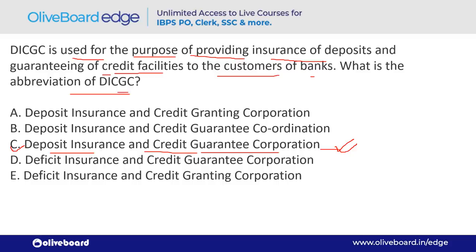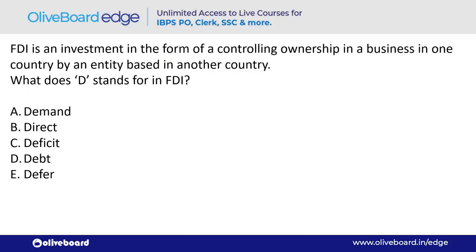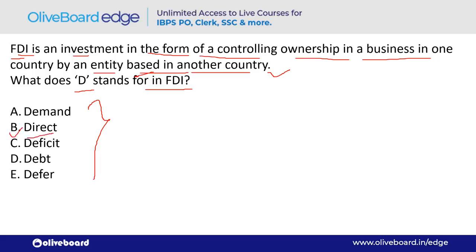FDI is an investment in the form of a controlling ownership in a business in one country by an entity based in another country. For example, Amazon — a US company headquartered in Seattle — investing in India is FDI. FDI stands for Foreign Direct Investment.